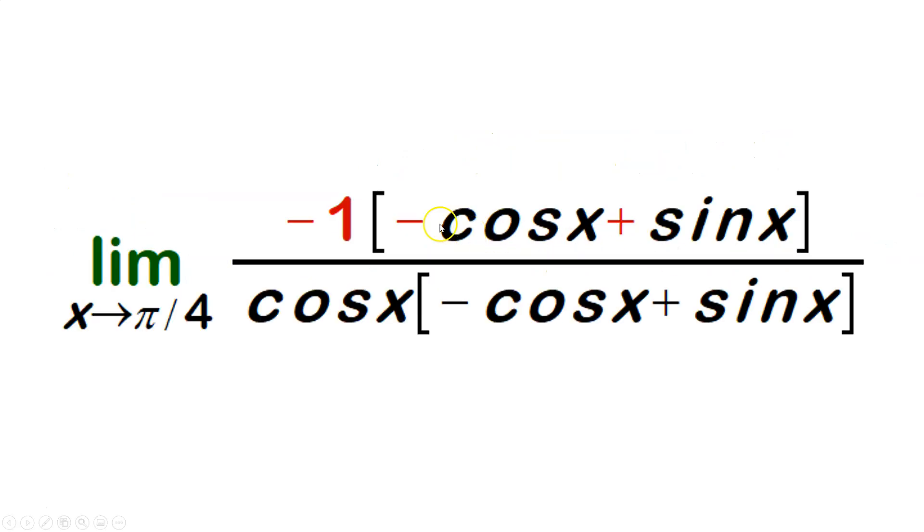That means in the numerator, I'm going to pull a negative 1 out and leave negative cosine x plus sine x. In the denominator, I've transposed the terms, so I get negative cosine x plus sine x instead. Now we have matching expressions between numerator and denominator, with the negative 1 outside. The limit is still as x approaches π/4.